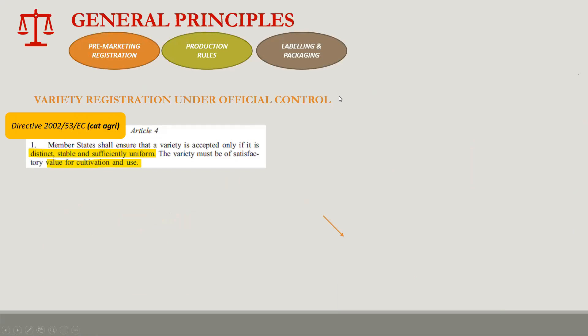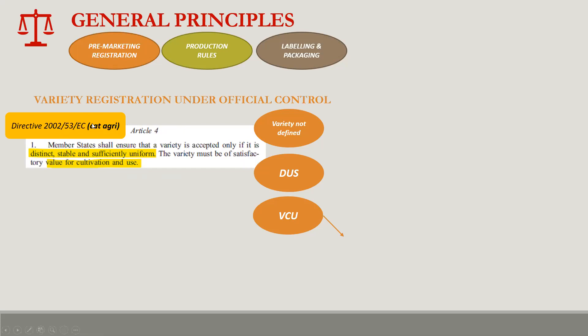The first principle is quite well known: you need to register a variety, which must be tested under official control in order to market the seeds of that variety. The concept of variety is not defined in the seed marketing legislation itself, but is defined in the regulation that establishes the Community Plant Variety Office — so it's defined in a text that grants intellectual property rights over seeds.